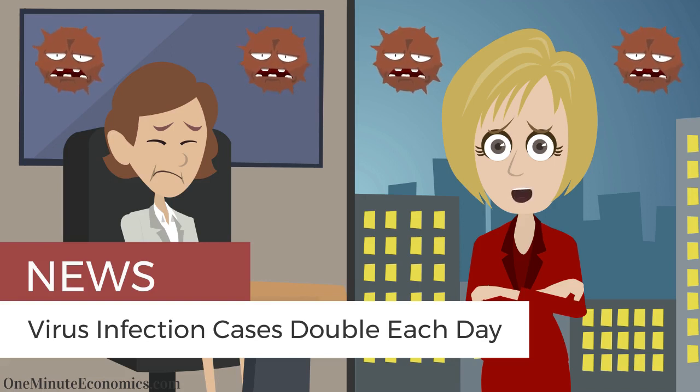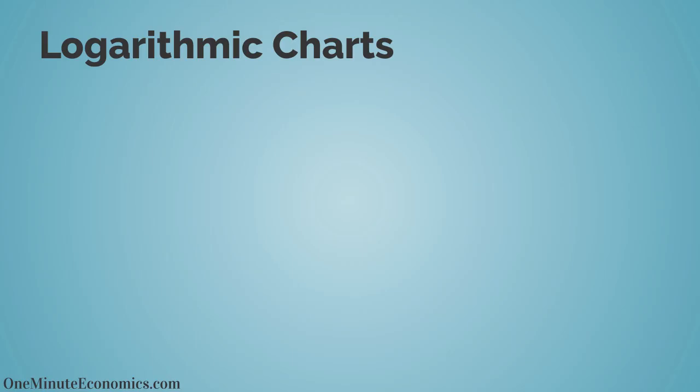If the number of total virus infection cases would double each day, from a logarithmic chart perspective, going from 500 to 1000 is displayed through a line just as long as going from 1000 to 2000.